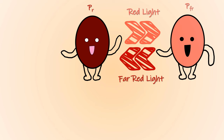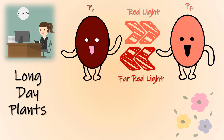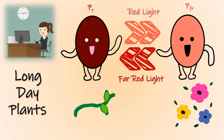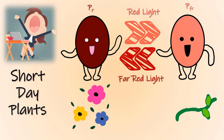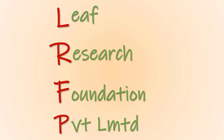When long day plants receive a flash of red light, they produce flowers — that is, in the Pfr form. However, when they are exposed to far-red light, flowering is prevented. The exact opposite happens in short day plants: red light, that is the Pfr form, prevents flowering in short day plants, whereas far-red light, or the Pr form, promotes flowering.